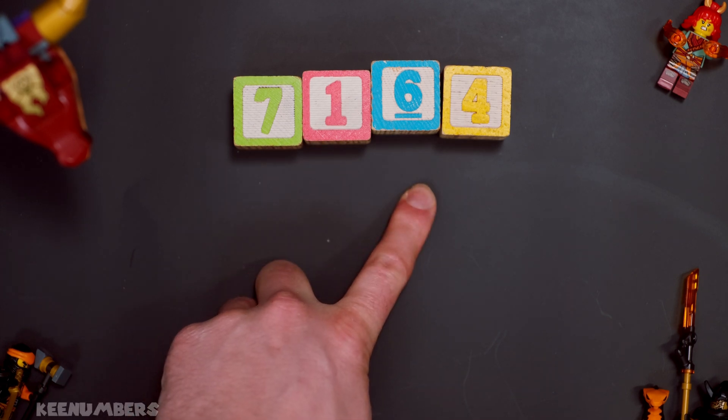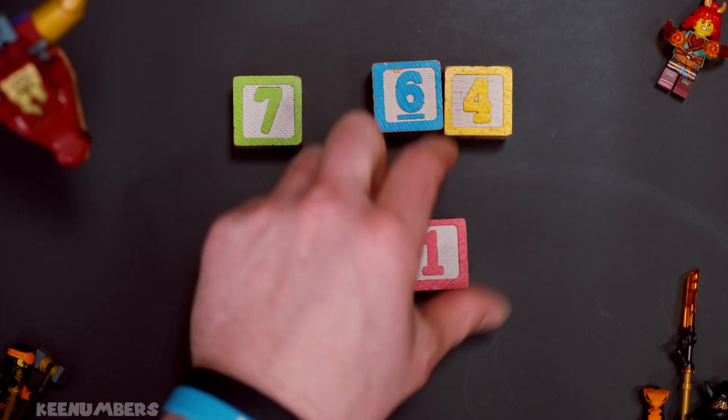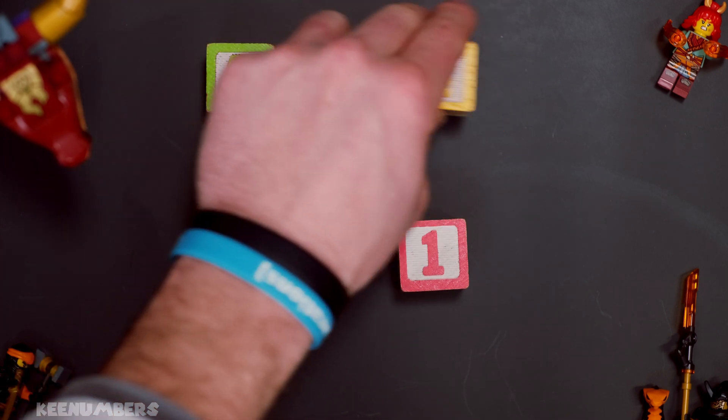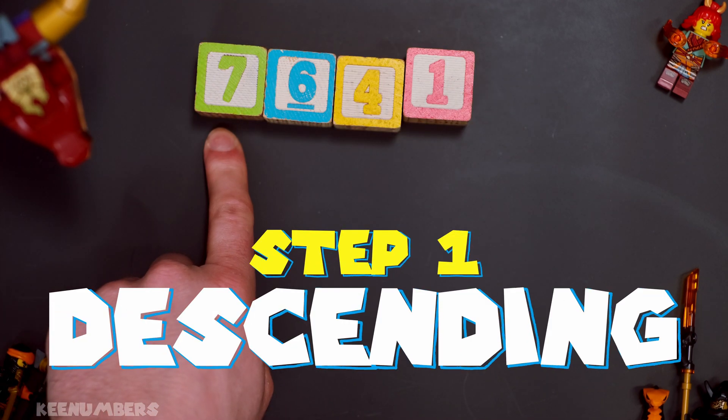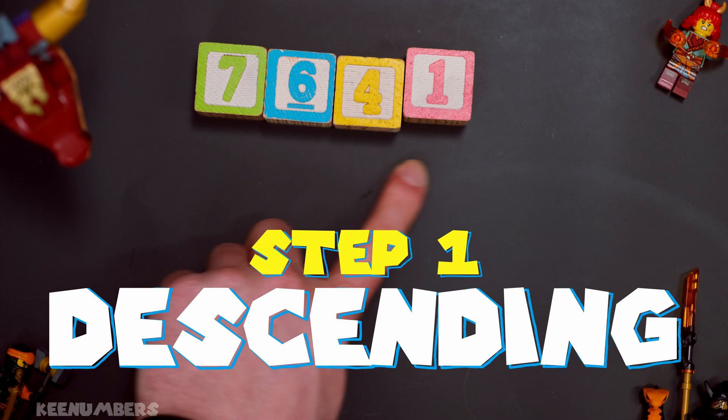7,164. We're going to take this number and rearrange it in descending order. Seven's the biggest, then we'll go six, four, and one.